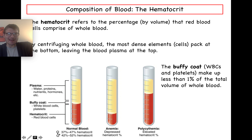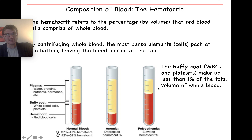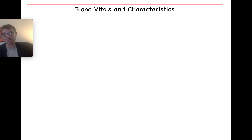A normal hematocrit is usually between 40 to 50 percent, varying slightly by gender. Comparing to the normal, anemia shows a low red blood cell count producing decreased capacity for carrying oxygen throughout the body. On the opposite end, polycythemia shows an elevated hematocrit where too much of the blood volume is made up of red blood cells, which can also be a problem.